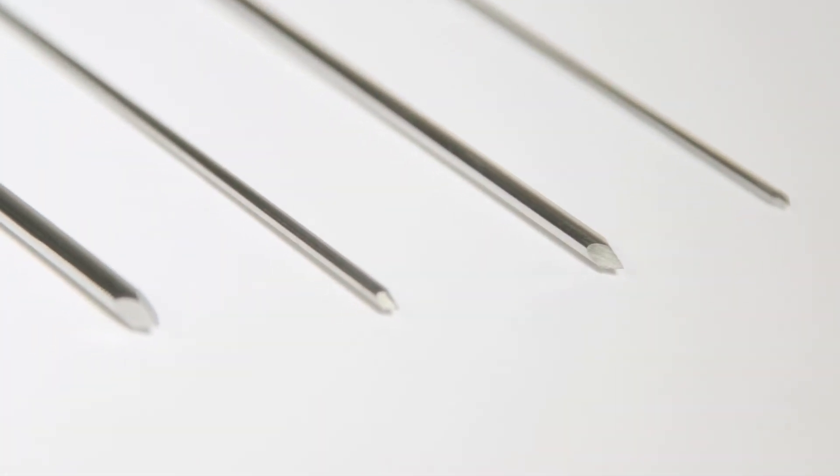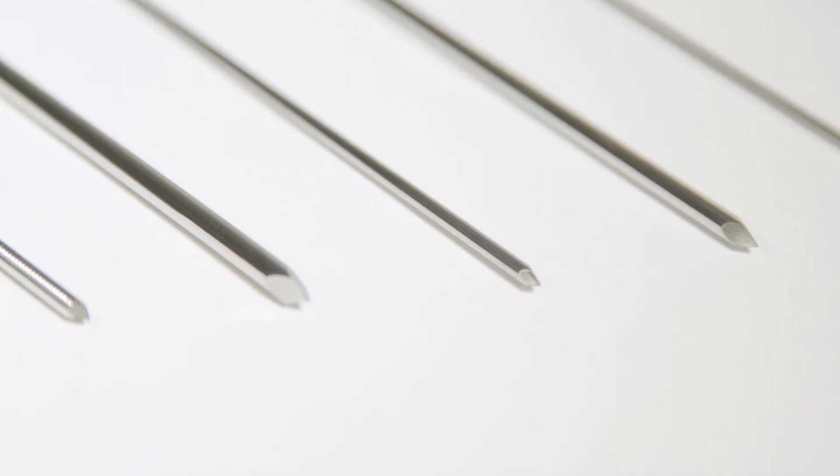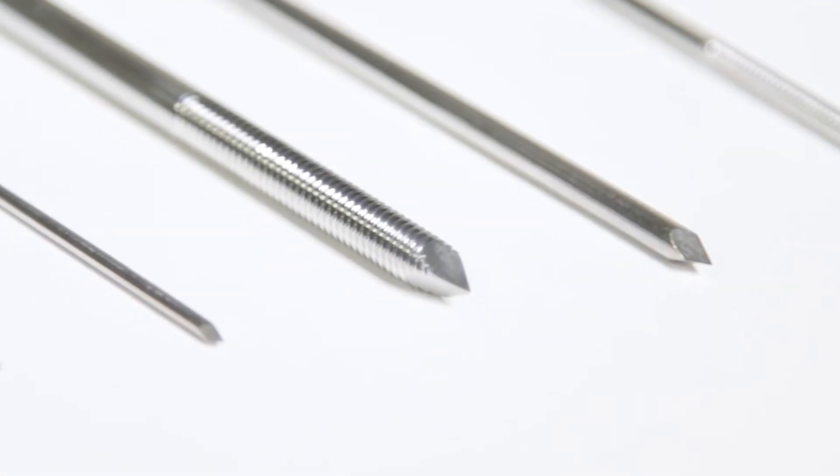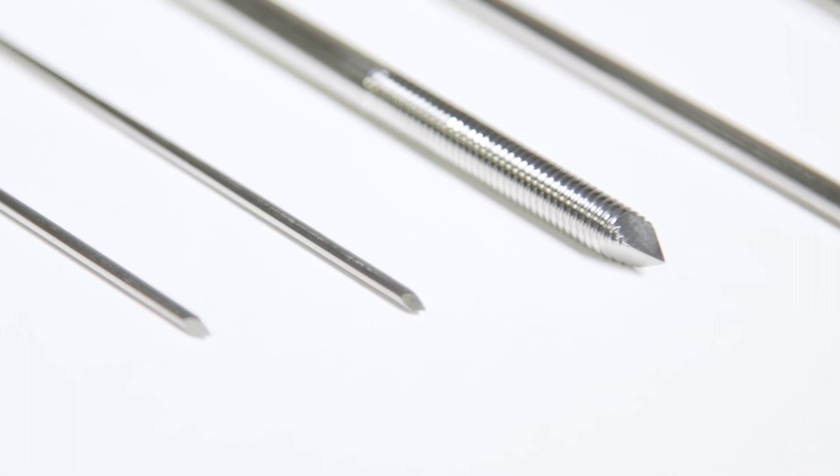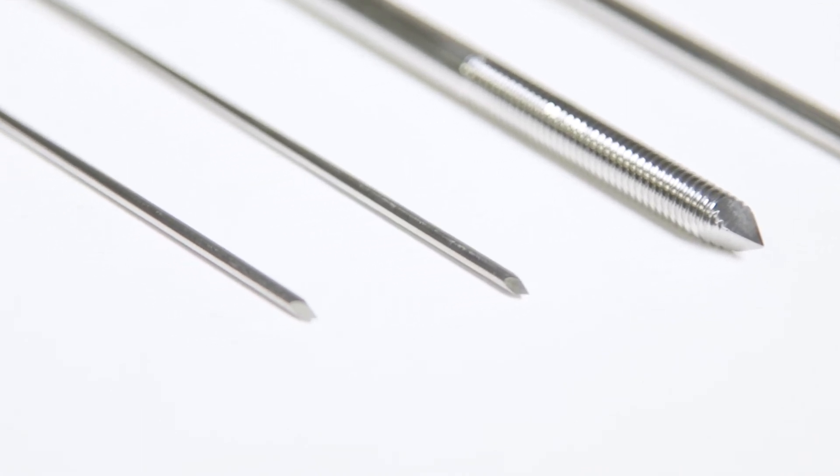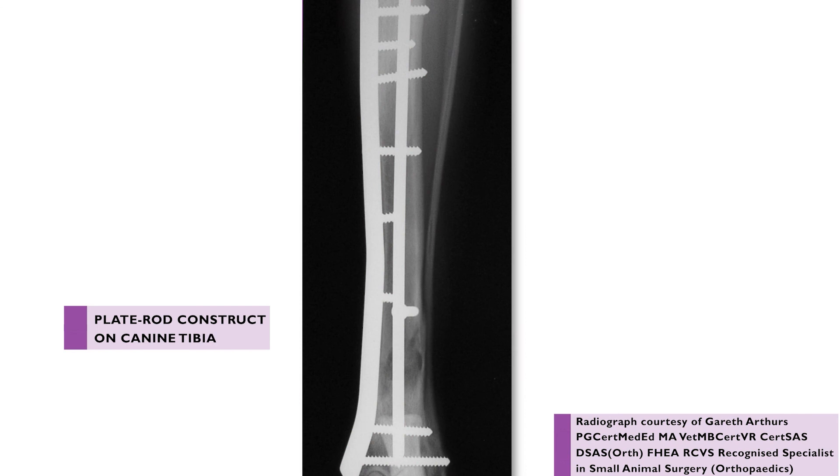They are available with a trocar tip at each end or with one end threaded. Some surgeons prefer the threaded version as it may reduce the chance of the IM pin backing out. IM pins are inserted into the intramedullary canal of a long bone to provide stability. An IM pin has very good resistance to bending but no resistance to rotation or compression, so will commonly be used in conjunction with other implants.